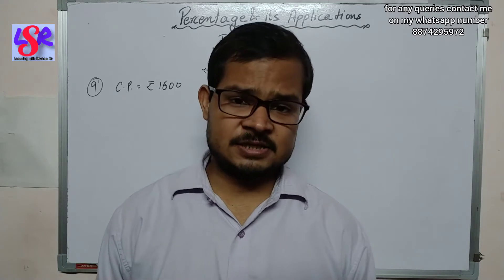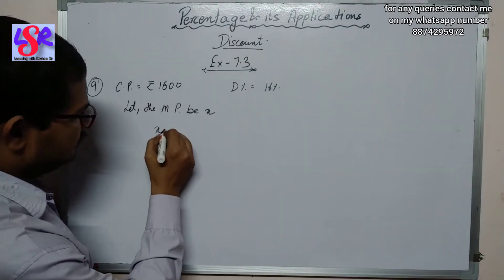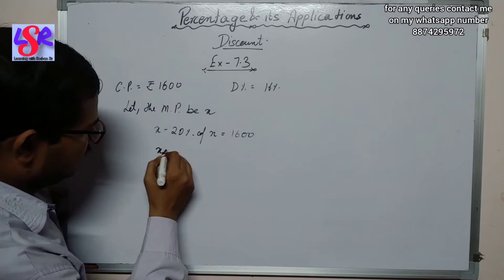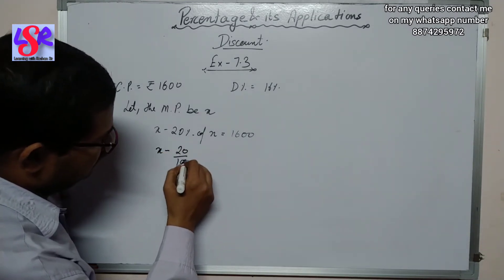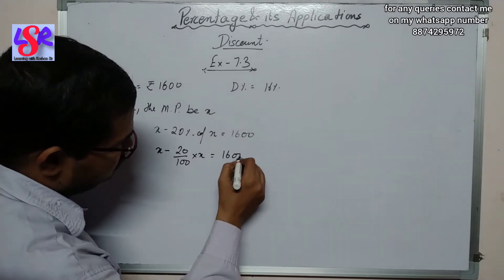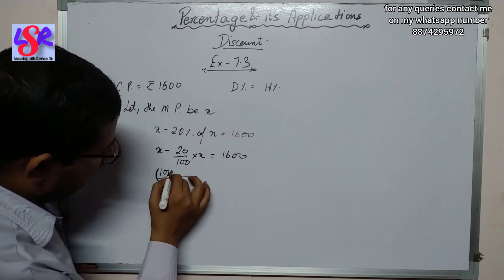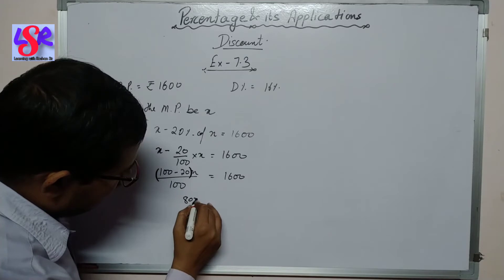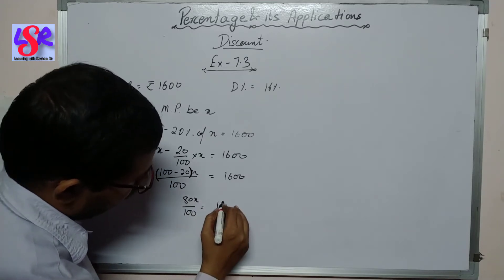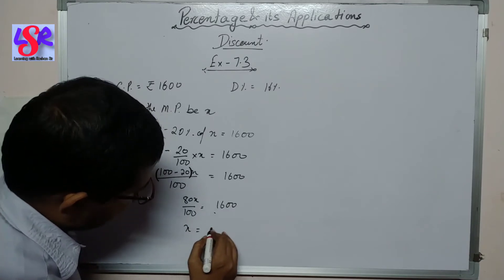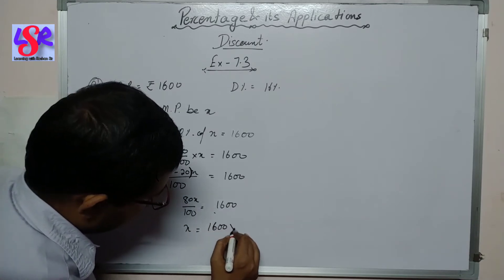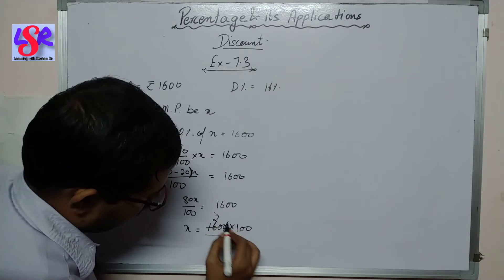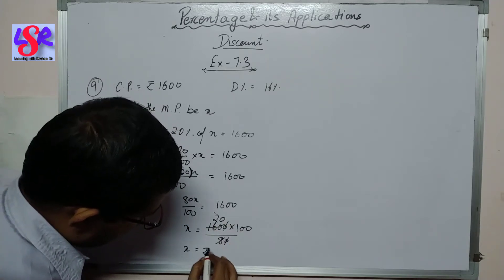So let the marked price be x. Then x minus 20% of x equals 1600. Solving: x minus 20/100 × x = 1600, which gives 80x/100 = 1600, so x = 1600 × 100/80 = rupees 2000. So the marked price is rupees 2000.